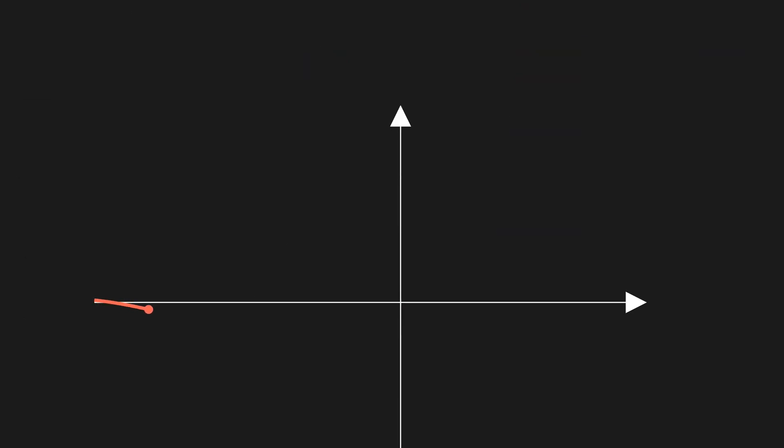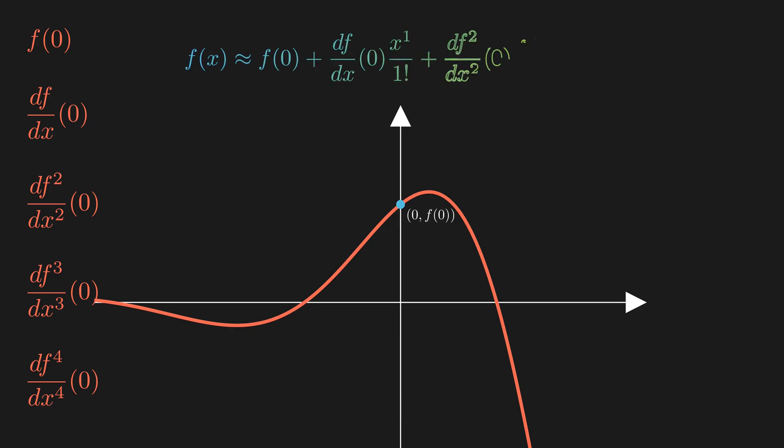For instance, let's say you're given a function like this. What you need to do first is compute its derivatives as many as you need, depending on how accurate you want your approximation to be. Then, you calculate the value of each derivative at x equals 0. In this way, you can find the Taylor polynomial that approximates your function.